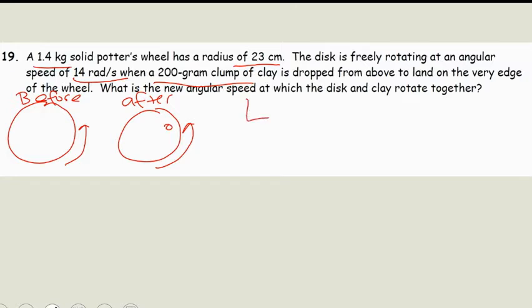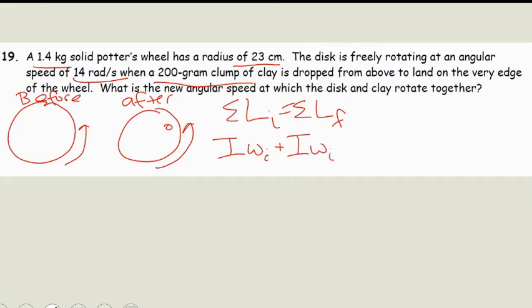We know that the sum of our momentum initial is equal to the sum of our momentum final. In the beginning we have just our wheel spinning at 14 radians per second, and we're looking at our rotational inertia. So we have: I·omega initial for our wheel, plus I·omega initial for our clay, equals I·omega final.